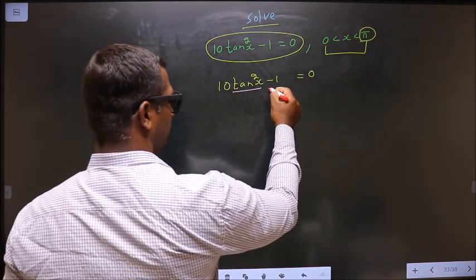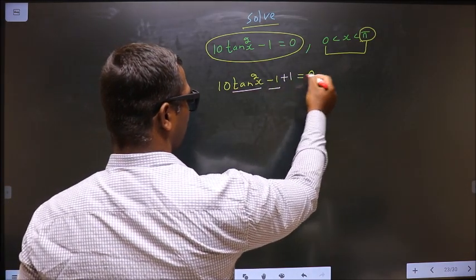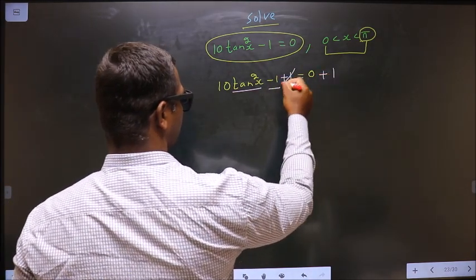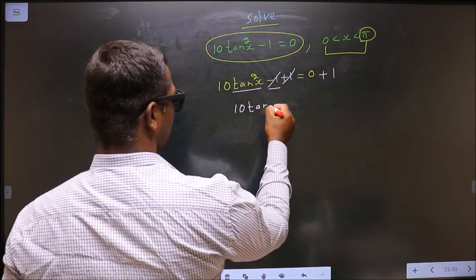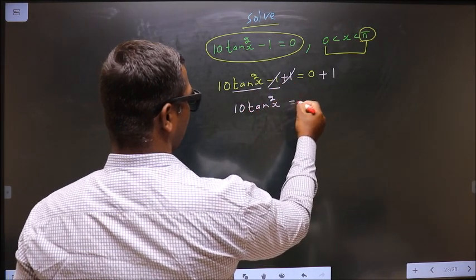First you should remove minus 1. For that you add 1 on both sides. So you get 10 tan²x = 1.